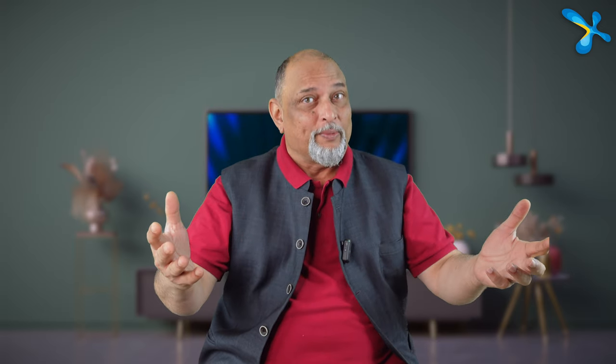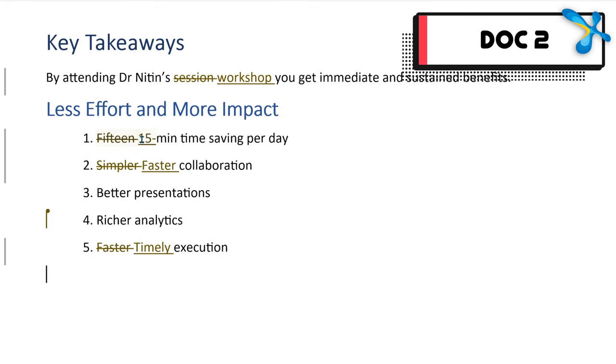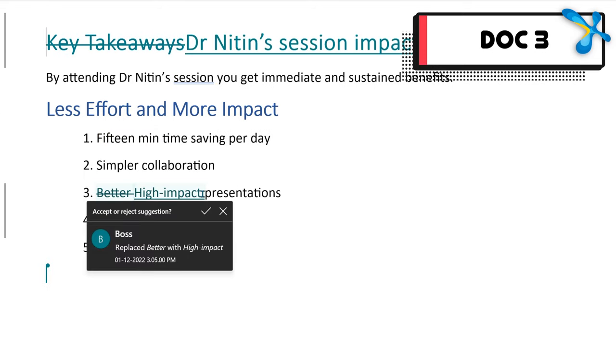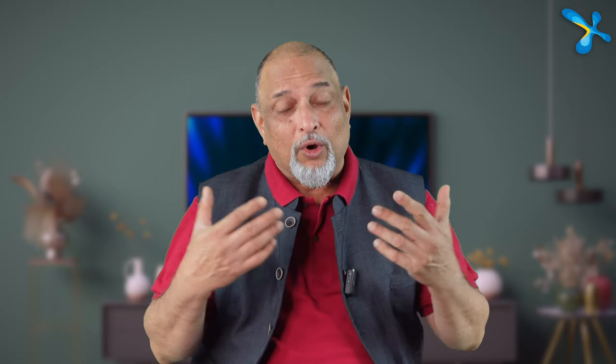Now let's talk about the real problem: how does the document go to multiple people? If you send it as an attachment to four people, everyone will have their own copy with track changes, and you'll get four documents back plus your original. That's very confusing. How do you create a combined document automatically without copy-pasting?